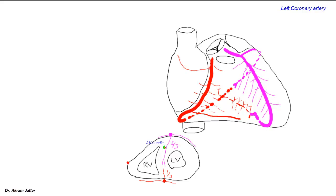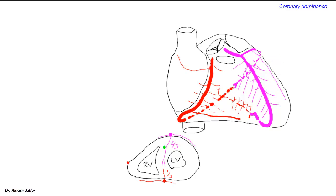The AV bundle is located in the interventricular septum. The circumflex branch, as it reaches the left margin of the heart — called the obtuse margin — supplies a marginal branch called the obtuse marginal branch or left marginal branch. On the inferior surface of the heart, it supplies small atrial branches to the left atrium, ventricular branches to the left ventricle, and anastomoses with the termination of the right coronary artery.